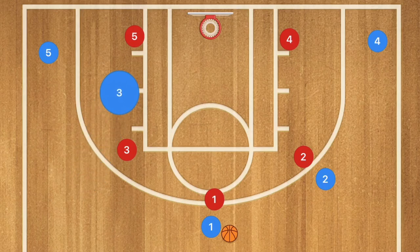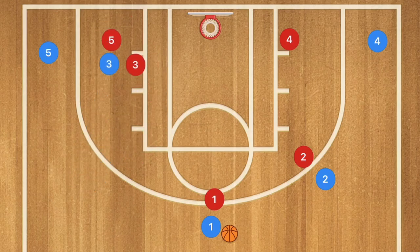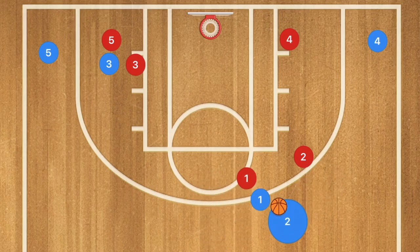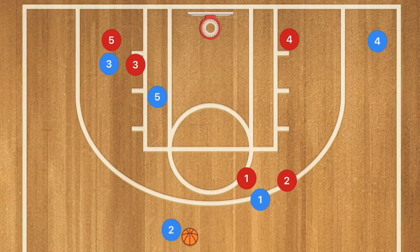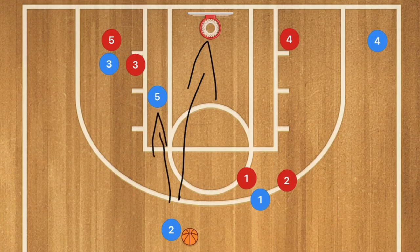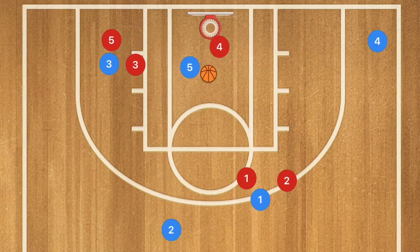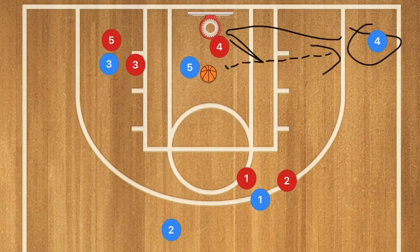In this first play, player three is going to set a screen down depending on where player five is playing, and then we're going to have a dribble handoff between players one and two. Player five is gonna curl in, player two gets the ball and could take that three-point shot, or pass to player five who can go in for a layup. If player five gets the ball and player four comes down for help defense, he could pass out to player four for a three-point shot.